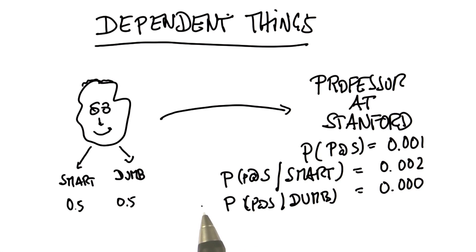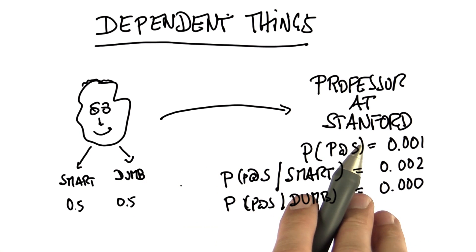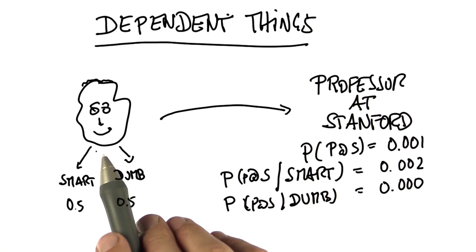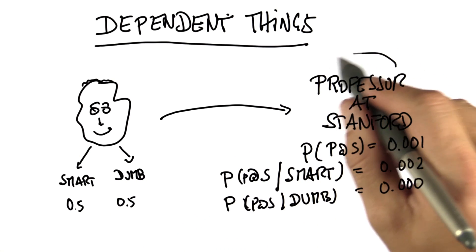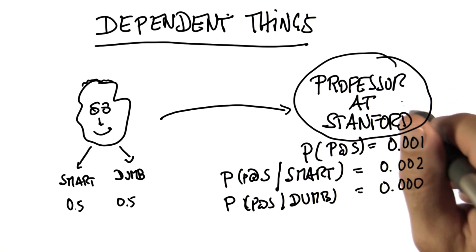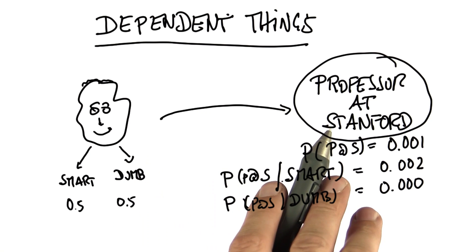Now, that's just an example, but you can think of them as two consecutive coin flips. The first is whether you're born smart or dumb. The second is whether you get a job of a certain type. And now, if you think of them as two coin flips, they're not independent anymore.